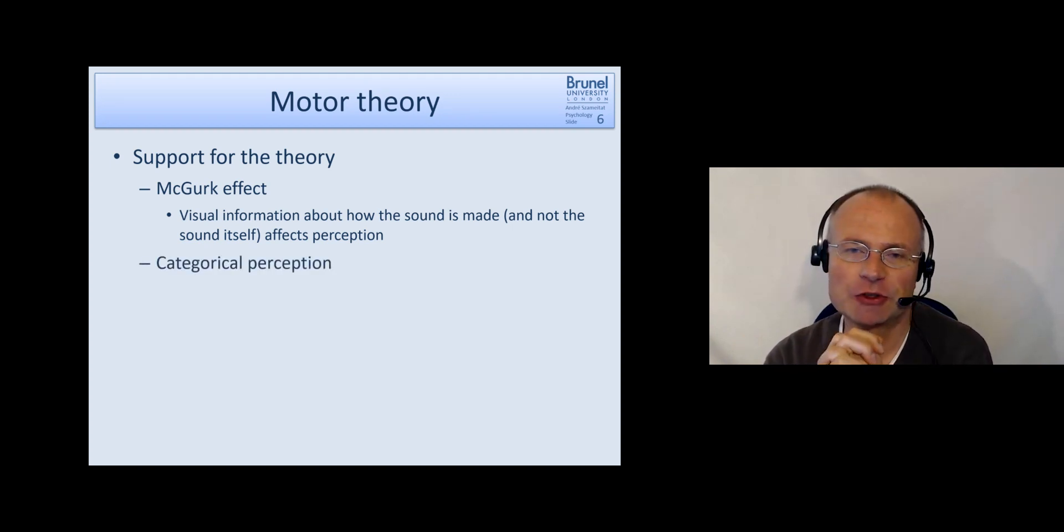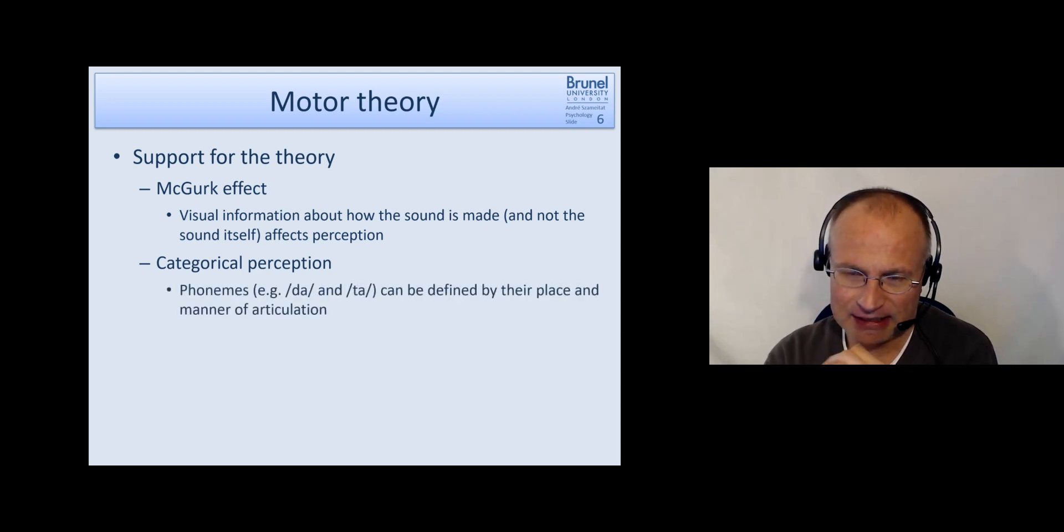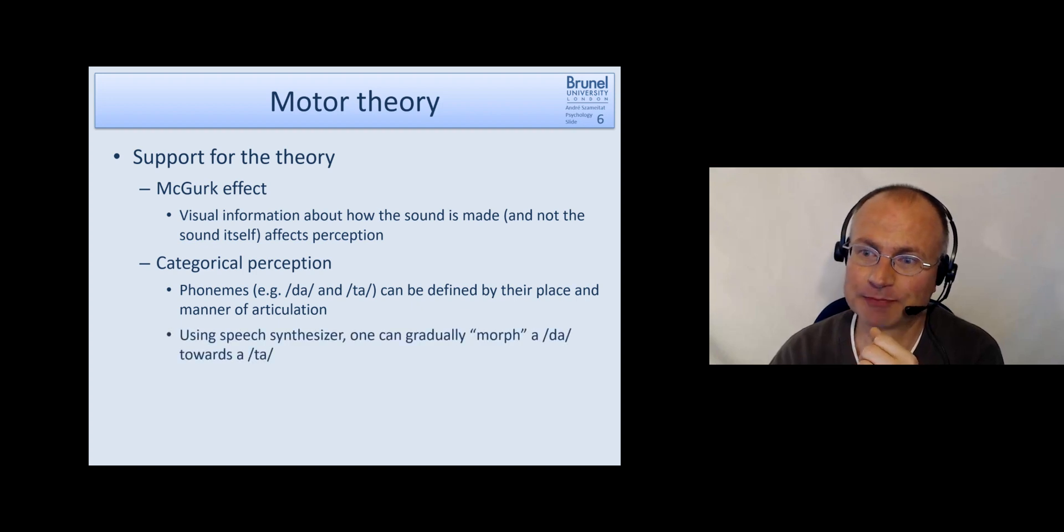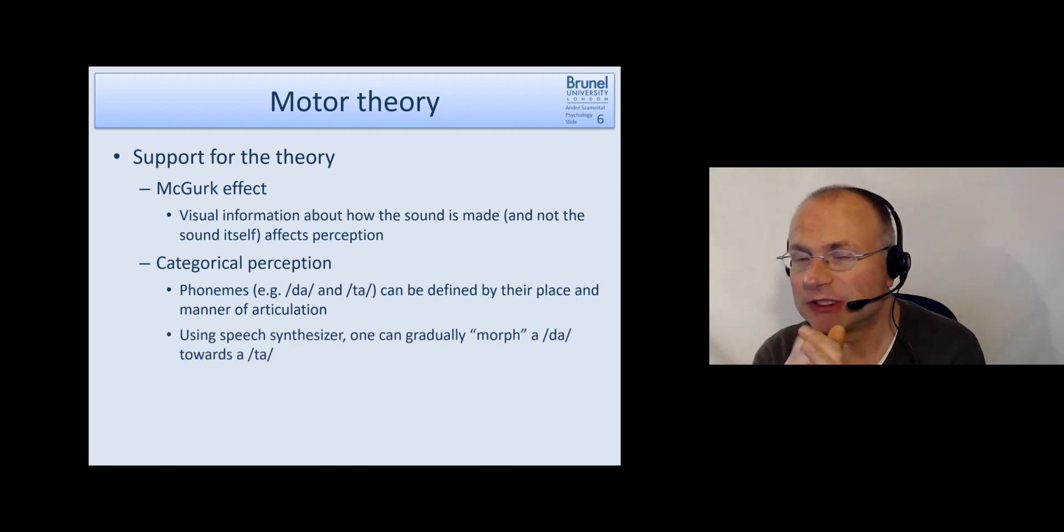Another support for the theory is a finding which is called categorical perception. What does that mean? If you remember last week we said we have different phonemes as the smallest units of sound which bring about a change of meaning or distinguishing meaning. An example is for instance da and ta. And these phonemes can be classified or defined by the place and manner of articulation. If you remember the place of articulation was where in the vocal tract is the airflow obstructed and the manner of articulation is how it is obstructed. So it can be quite nicely defined by these two parameters.